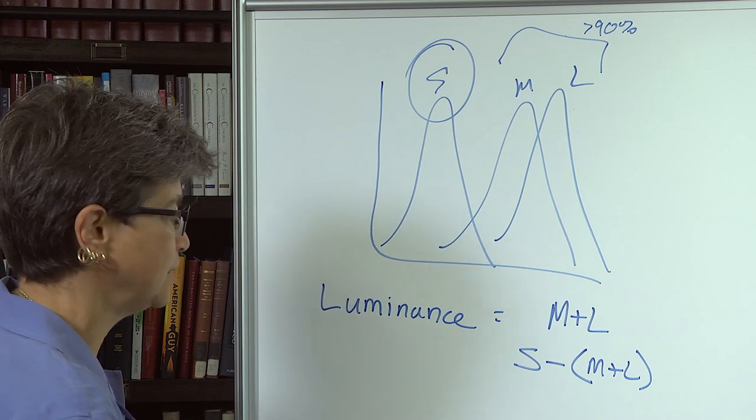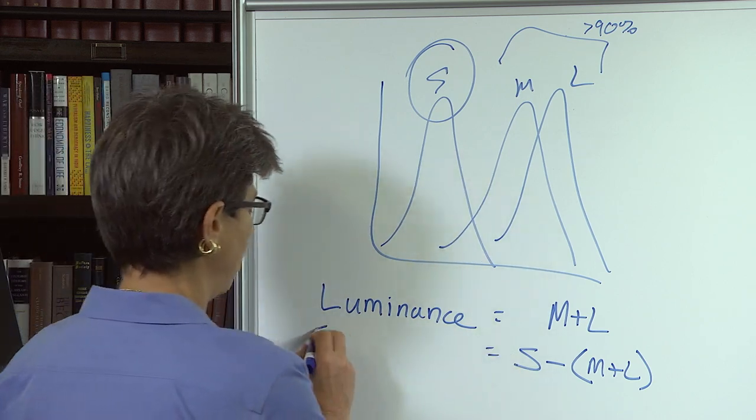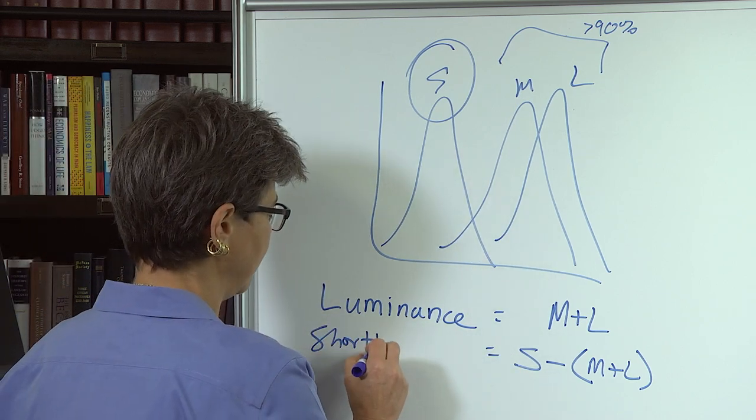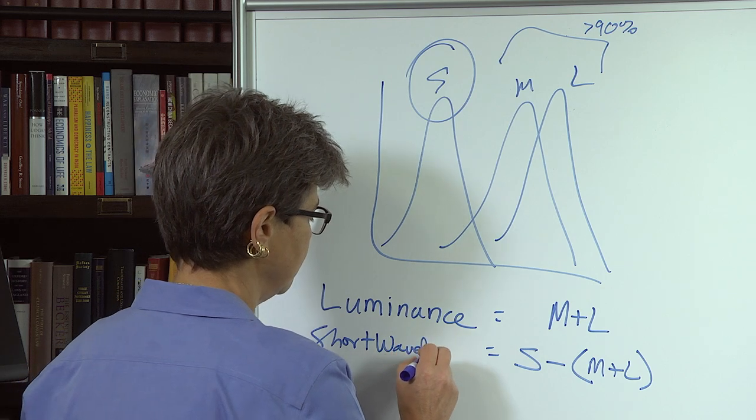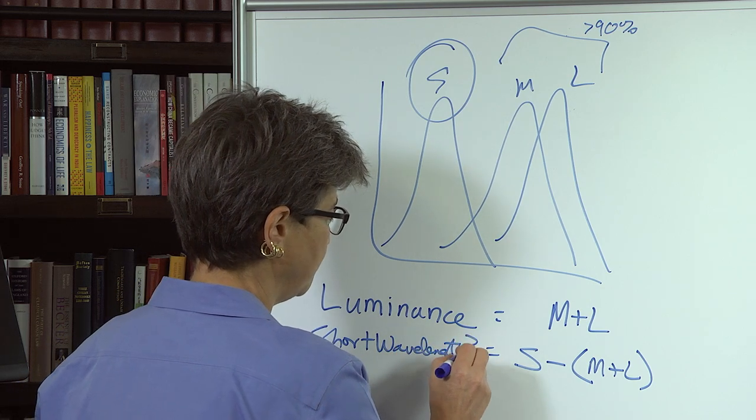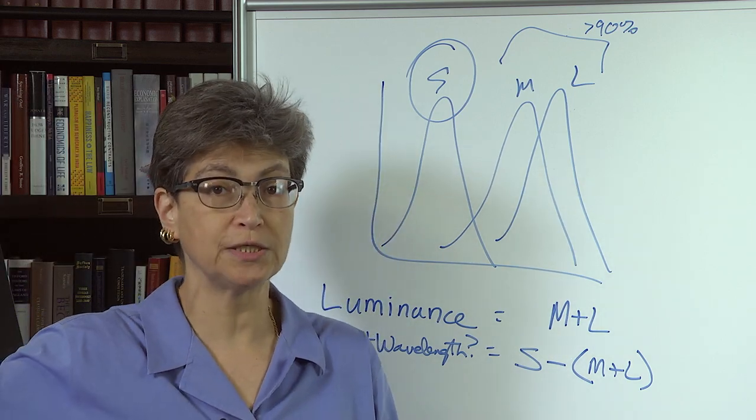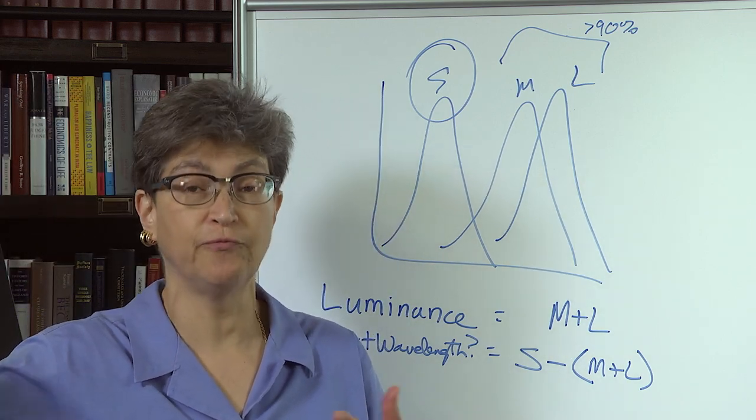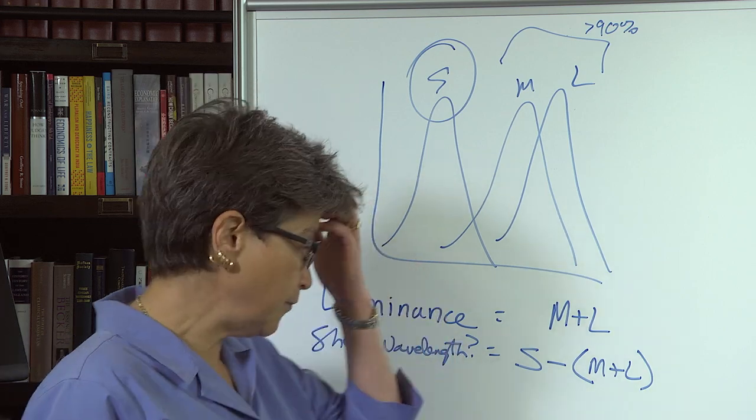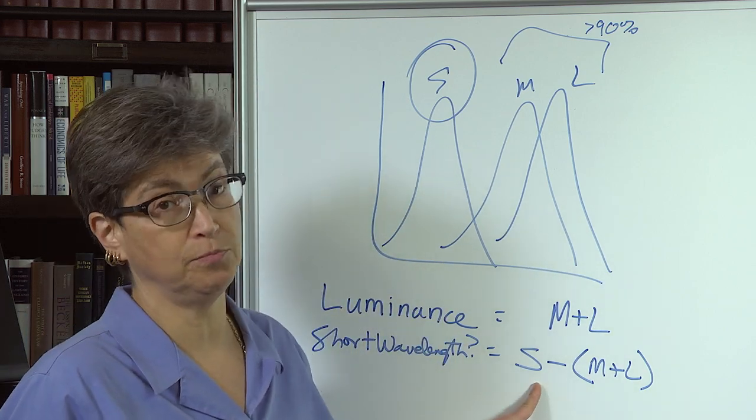And what that tells us is how much short wavelength is there? Is there a lot? If there's a lot, then cortex is probably going to end up seeing some version of blue or violet. If there's not much, then they're not going to see blue or violet.